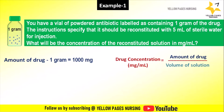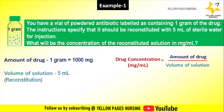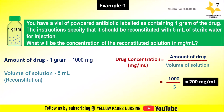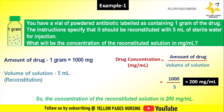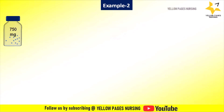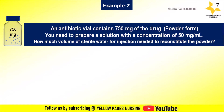Here, the amount of drug is one gram, which equals 1000 milligram. The volume of solution after reconstitution is 5 ml. As per the formula, drug concentration equals 1000 divided by 5, which gives 200 milligram per ml. So the concentration of the reconstituted solution is 200 milligram per ml.